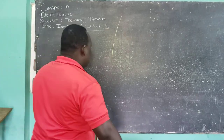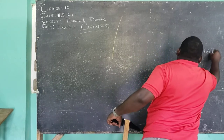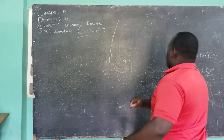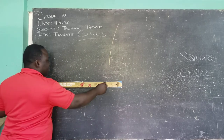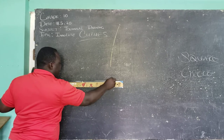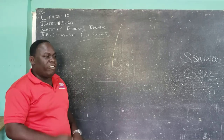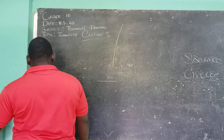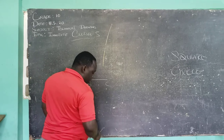So today we're going to be doing the involute of a square, and we're also going to be doing the involute of a circle. Now, let us say that one side of your square is going to be 25 millimeters, so one side is 25 millimeters, and certainly it is very easy for you to construct your square.